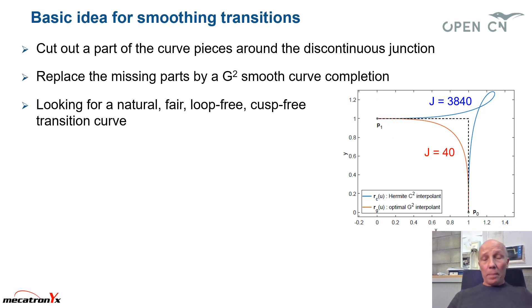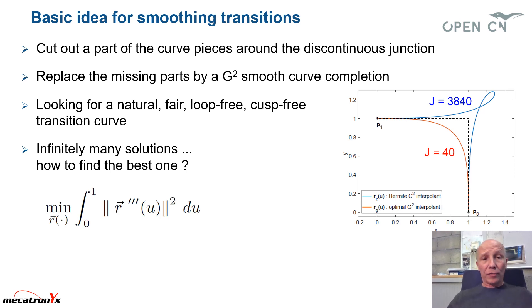Okay, so we are searching for natural curve completion, which should be loop-free, cusp-free transition. So the blue one here is not suitable for us. There are infinitely many solutions. So how to find the best one? You have to pose a cost function.